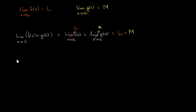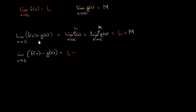We can come up with a very similar one with differences. The limit as x approaches c of f of x minus g of x is just going to be L minus M — that is, the limit of f of x as x approaches c minus the limit of g of x as x approaches c. This is often called the difference rule or the difference property of limits.